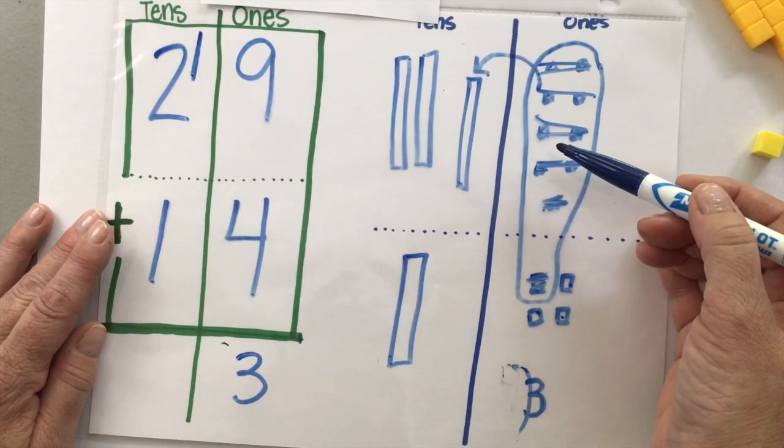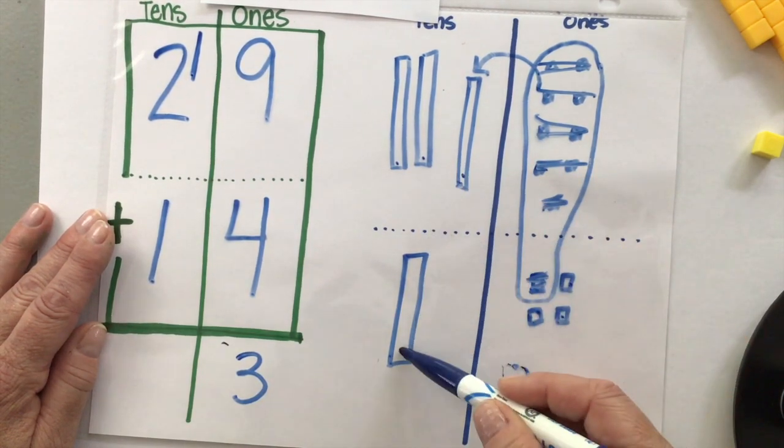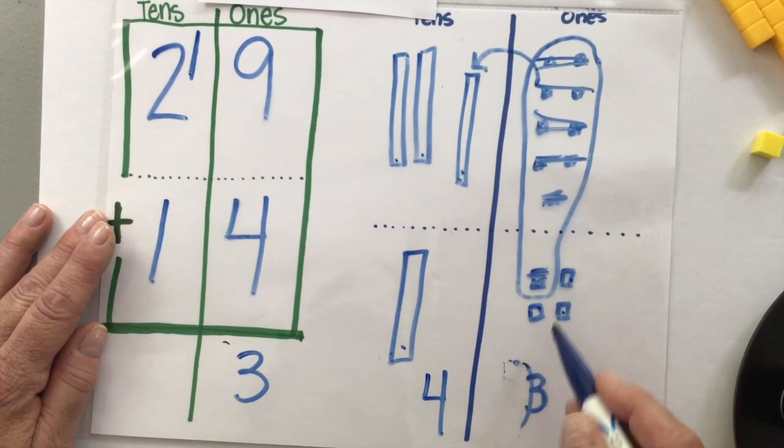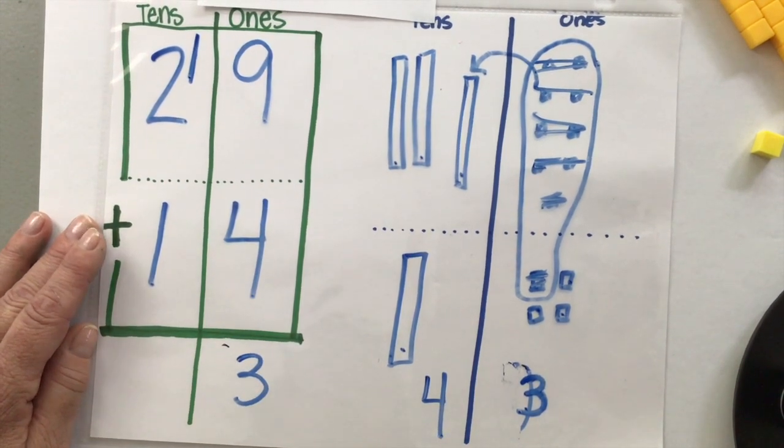So let's see what we made of all of this. Let's count our sets of tens now. One, two, three, four. Four sets of 10. And what's left over here after I regrouped was three. 43.